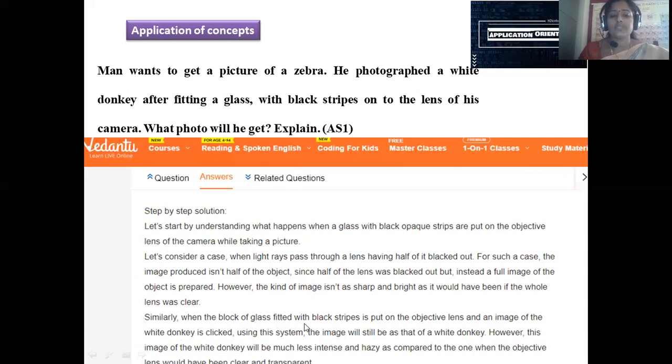Similarly, when the block of the glass fitted with black stripes is put on the objective lens and the image of the white donkey is clicked, there is a possibility of blurredness instead of transparent and very clear picture. That is the case which is going to happen here. So in this manner, half of the lens is going to be blocked by black color strips, so that blurred image formation is possible instead of a clear image. By this, we completed this entire unit 4. Hope this session will be helpful for your preparation. Thank you very much for your consistent listening. Thank you one and all.